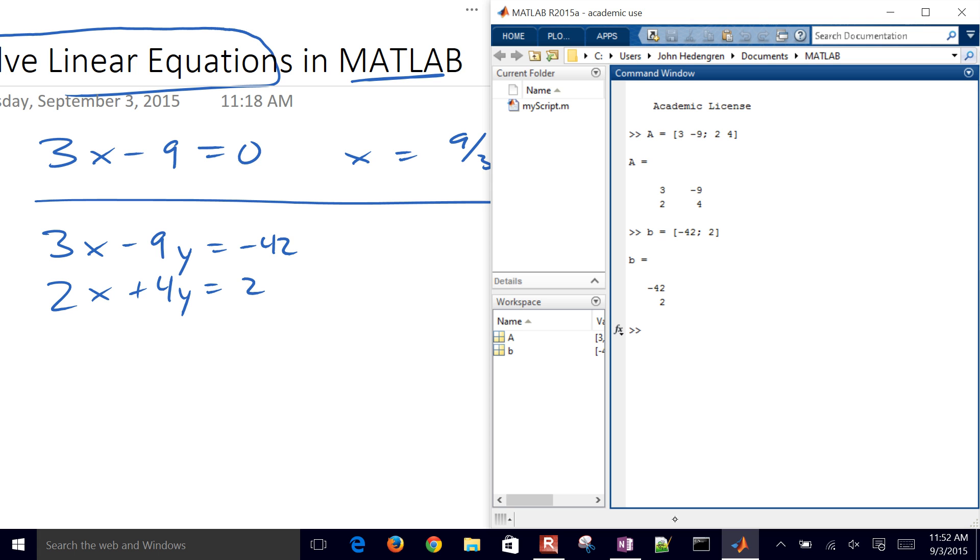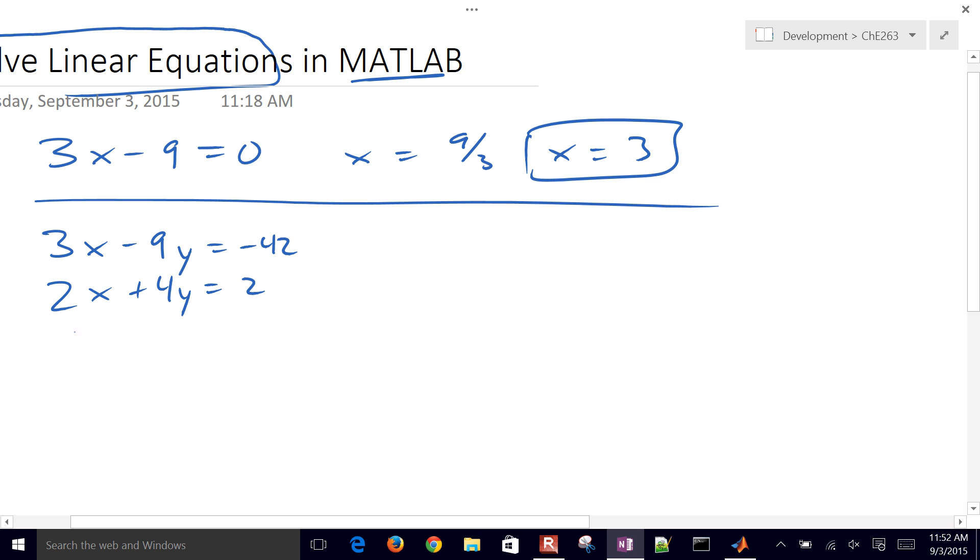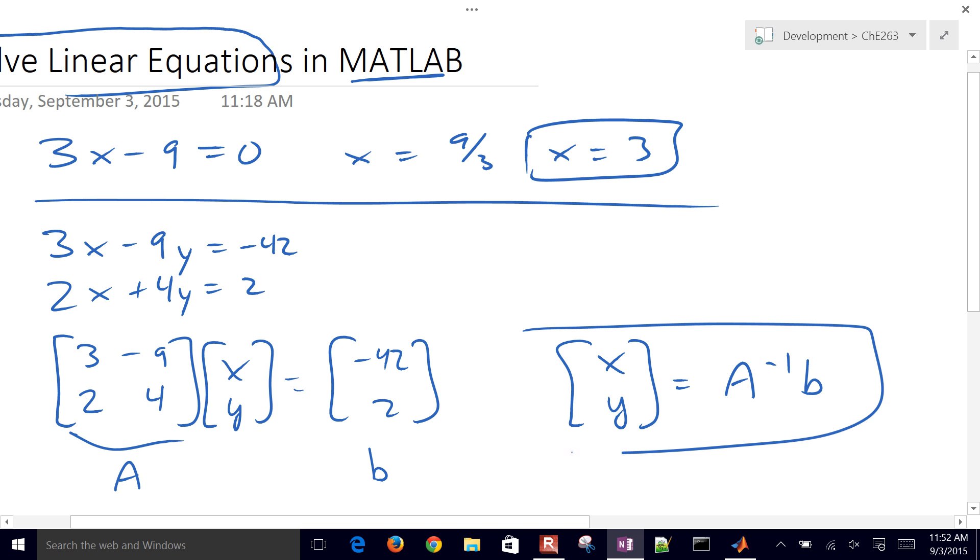So I'm basically just putting this into an alternate form here, which is 3, negative 9, 2, and 4 times X and Y equals negative 42 and 2. And then to be able to solve this, I'll just do X and Y equals this is matrix A and vector B. It's just going to be A inverse times B. So that will give me the solution to this equation.